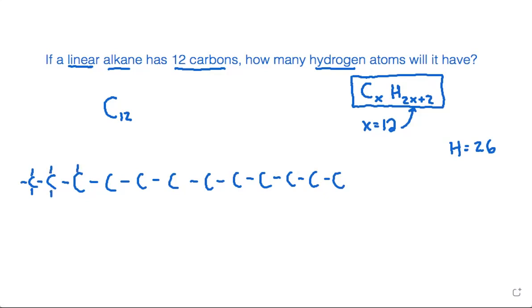And continuing along down the line, this one we'd need two more, this one would need two more, this one would need two more, this one would need two more, this one would need two more, and on and on until we get to the very end. And this carbon at the very end, since it only has one bond, it will need three more to make a total of four.